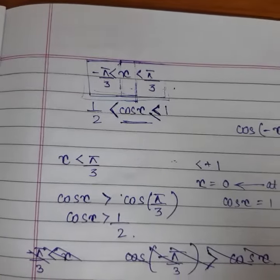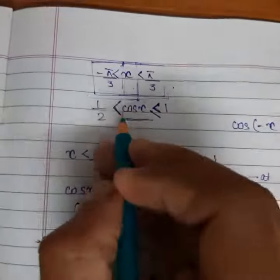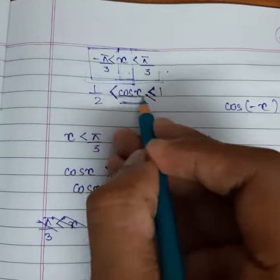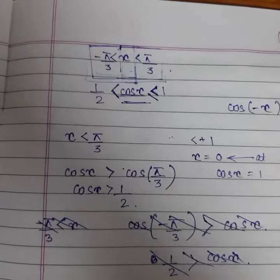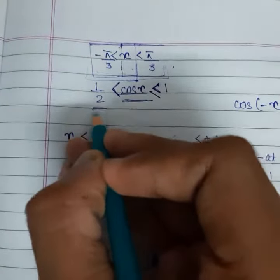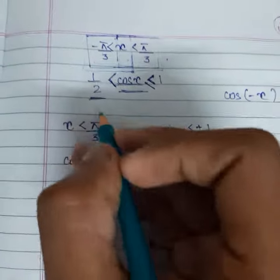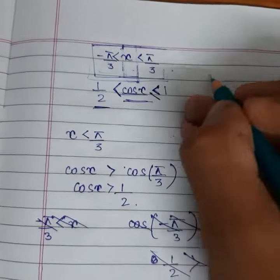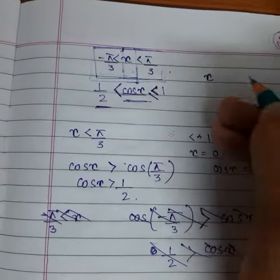The reason behind it is that we were trying to find out the minimum value of cos x. The minimum value of cos x we were trying to find out which we would put over here. So to find out the minimum value of cos x, we need the maximum value of x for that.